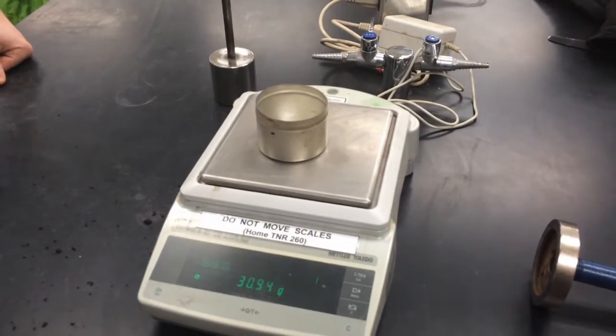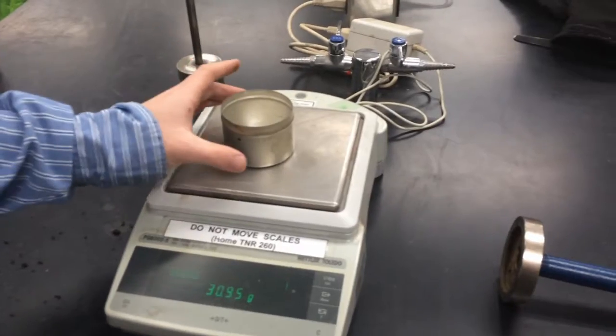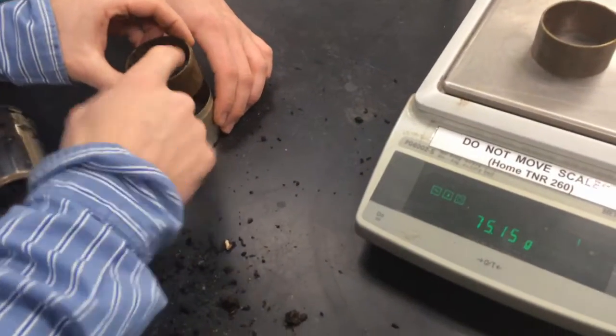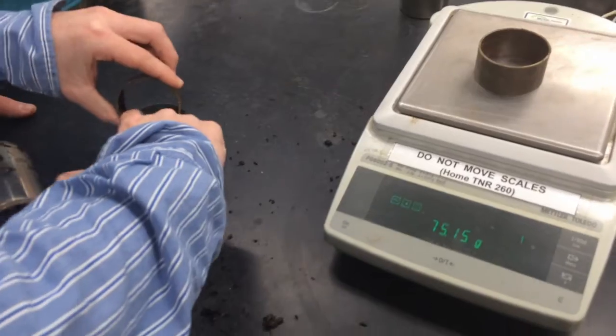Weigh an empty soil tin and record its mass. Empty the ring of soil into the tin, making sure to get all of the soil from the edges of the ring.